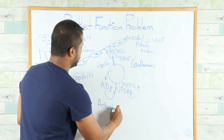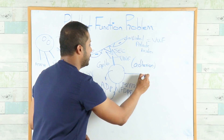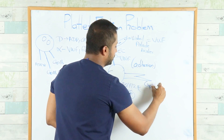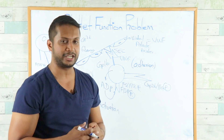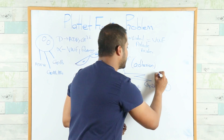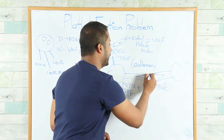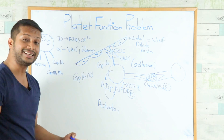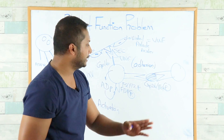After activation, the platelet transforms and expresses its GP2b3a receptor. This is where attachment occurs — the platelet attaches to other platelets. A second platelet binds to the first via fibrinogen, which comes from the alpha granules of the platelets. This is the formation of your primary platelet plug.